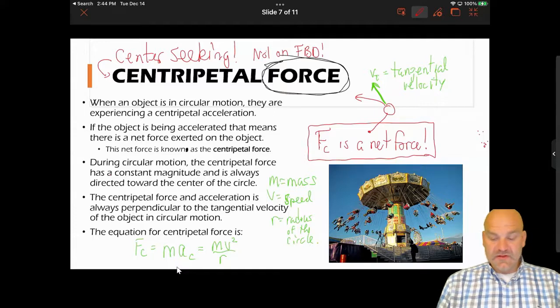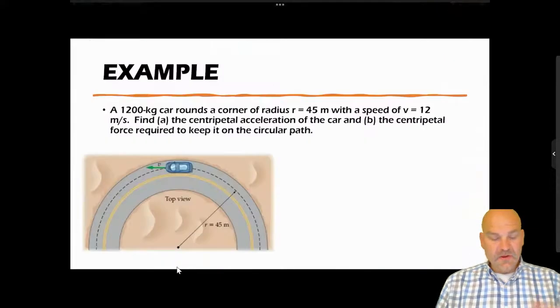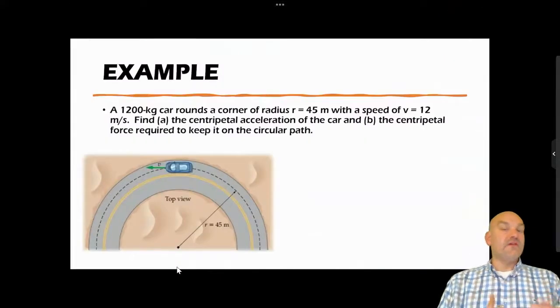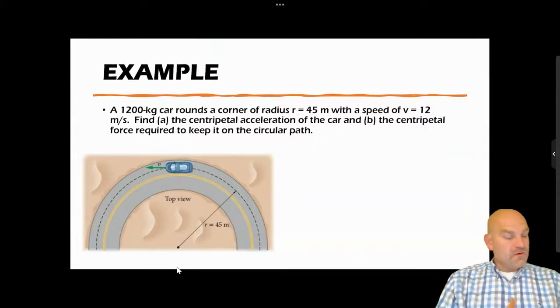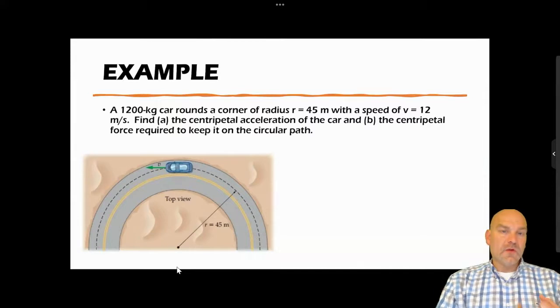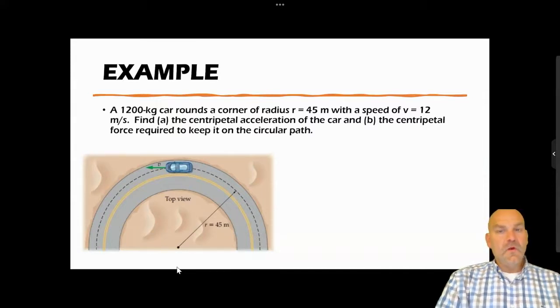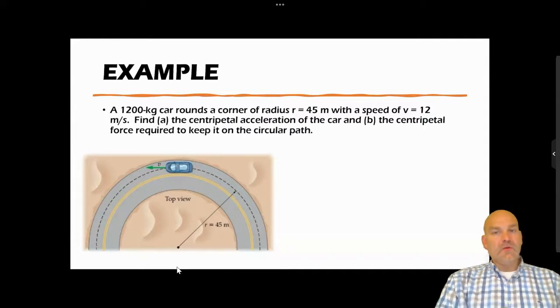This example is kind of centered around this car going around the turn. So we have a 1200-kilogram car rounding a corner with the radius of 45 meters with a speed of 12 meters per second. We have to find two things: the centripetal acceleration and the centripetal force required to keep it on that path.